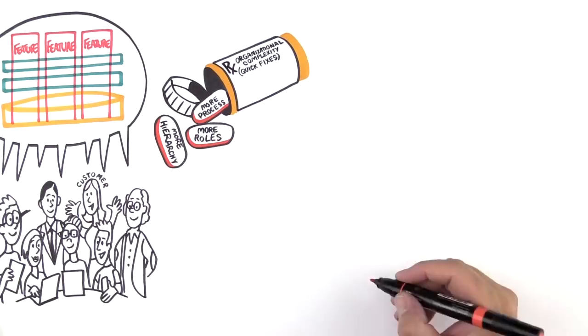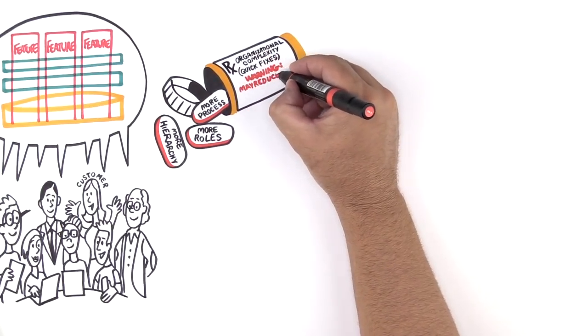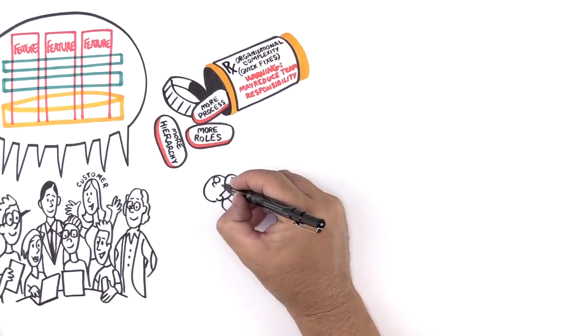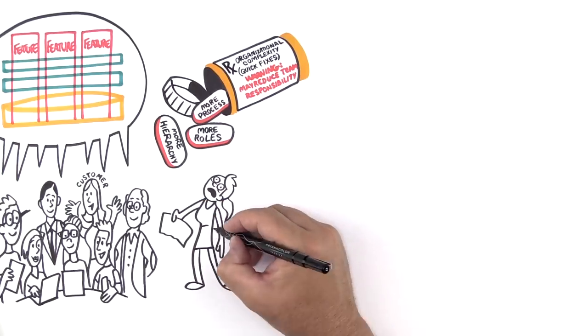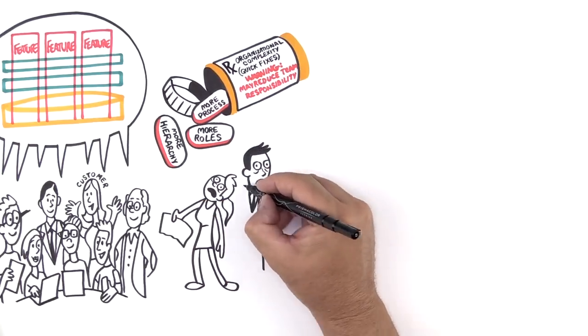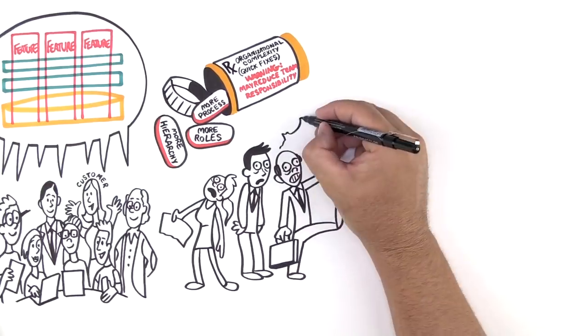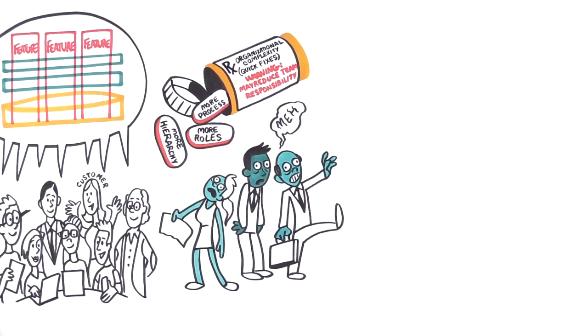But all three of these quick fixes can exacerbate the underlying problems by reducing team responsibility. Giving responsibilities to processes, specialized roles, or other departments takes responsibilities away from the team. Companies wind up with employees who are just mindless zombies. We believe in removing that complexity instead.